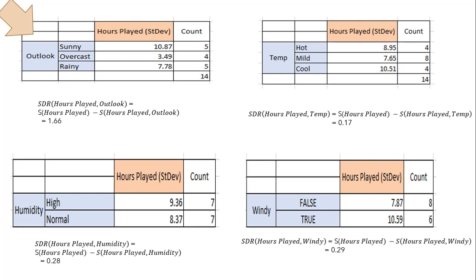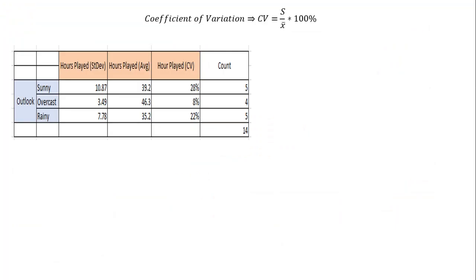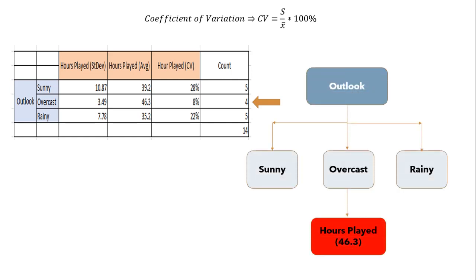The dataset is now divided based on the values of the selected attribute — the outlook column. This process runs recursively on non-leaf branches until all data is processed, but we must have some termination criteria. I set a threshold value for coefficient of variation as 10%. When coefficient of variation for a branch becomes smaller than that threshold, the subset does not need further splitting. Calculating coefficient of variation for outlook values using SD over x_mean × 100%, overcast has a coefficient of variation of 8%, which is less than the threshold. So we will not split this subset further, and the leaf node gets the average of the overcast subset, which is 46.3.